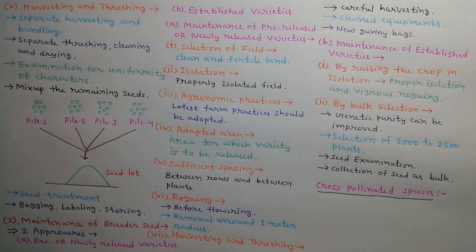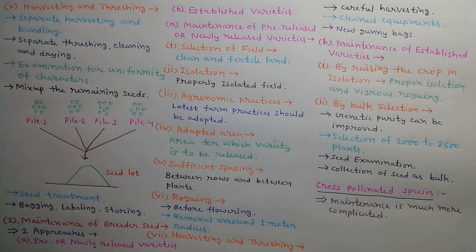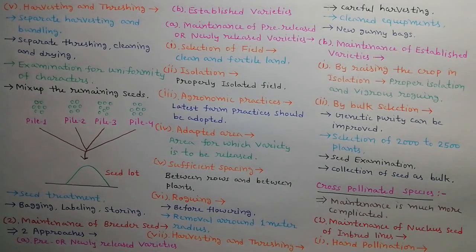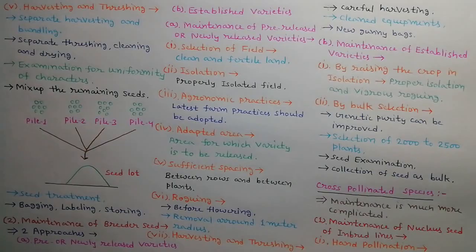Next we will discuss the maintenance of nucleus and breeder seed in cross pollinator species. In cross pollinator crops the maintenance of variety is much more complicated than self pollinator crops. First is maintenance of nucleus seed in inbred lines. First step is hand pollination. Self pollination or sieve pollination or both are used in inbred lines.